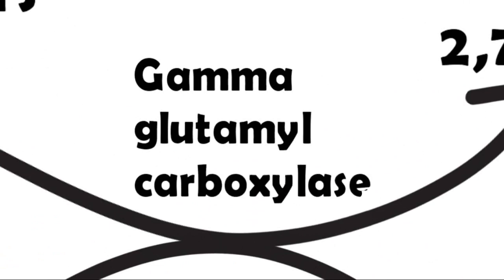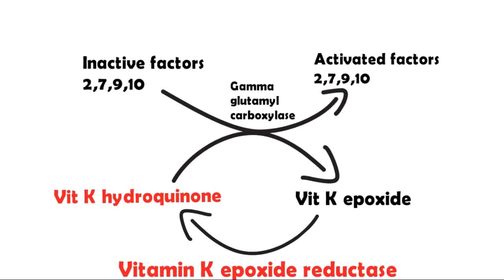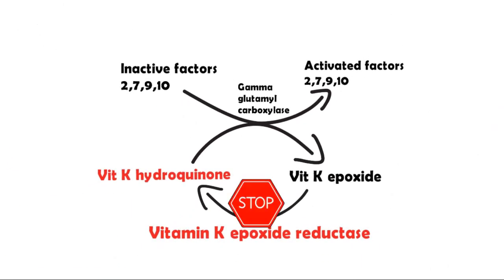What warfarin does is that it inhibits the enzyme vitamin K epoxide reductase, and by doing so it decreases the levels of activated factors 2, 7, 9, and 10 in the blood.